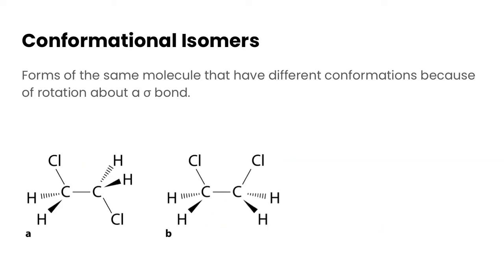Conformational isomers are forms of the same molecule that have different conformations, so that's where the name is coming from, because of rotation around a sigma bond, or if you remember, a sigma bond is a single bond.